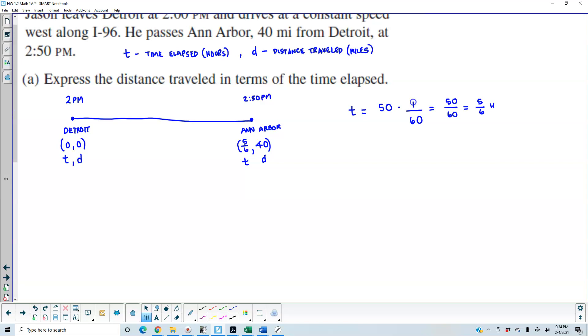Now we want to express the distance traveled in terms of the time elapsed. What we can do is find the slope. We can take this as distance 1, this is time 1, this is distance 2, and this is time 2. What we're going to do is take distance 2 and subtract distance 1 over time 2 minus time 1.